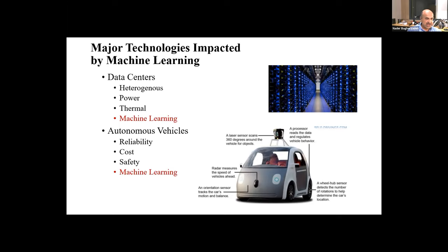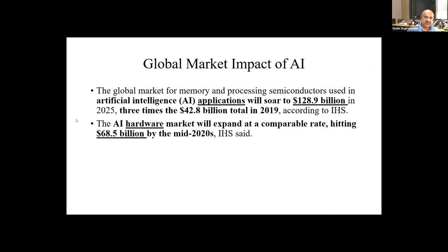There have been setbacks. It was predicted by none other than Elon Musk that by 2022 we would have close to level four autonomous vehicles. We're nowhere close to that for next year. They are making significant progress, but the projections are not in place for various reasons, because some of the algorithms have to be tuned and there are problems with them. You saw some of the accidents that were reported.